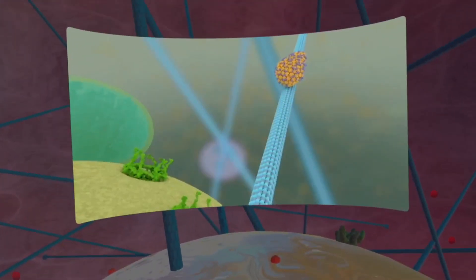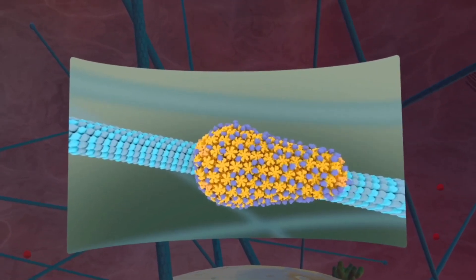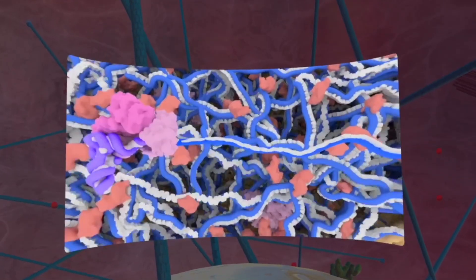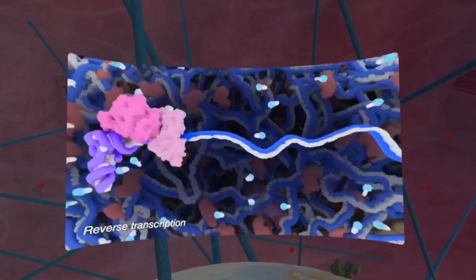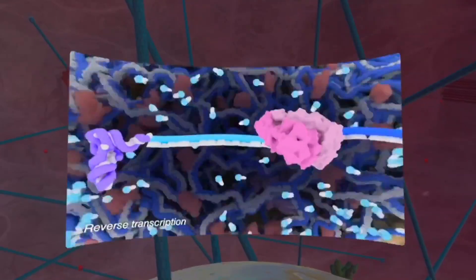As the virus approaches the nucleus, a viral enzyme known as reverse transcriptase, RT, in red, gets to work. The RT, using the free nucleotides it finds in the nucleus, begins to transcribe the genome of the virus.